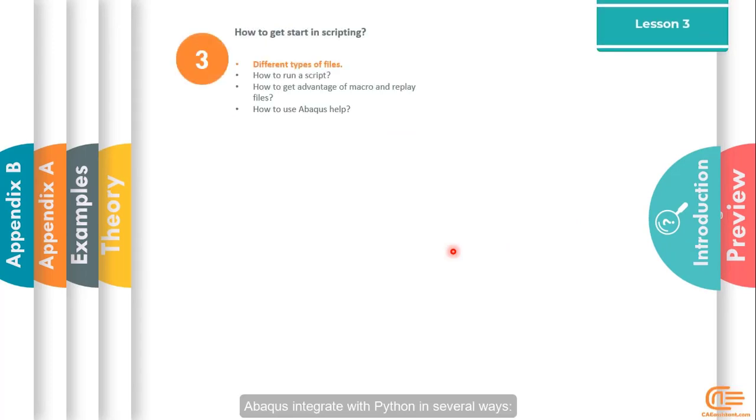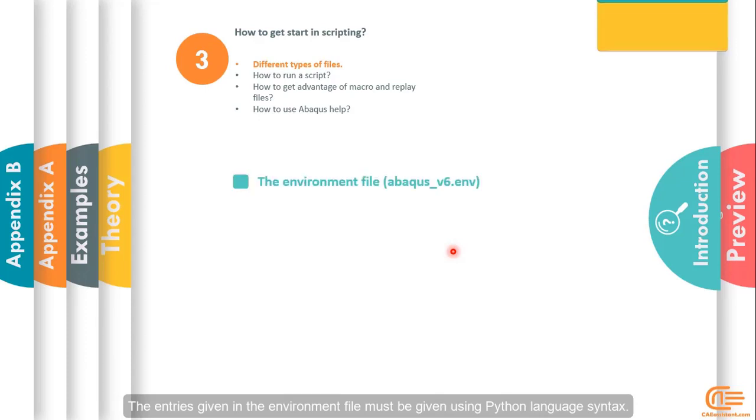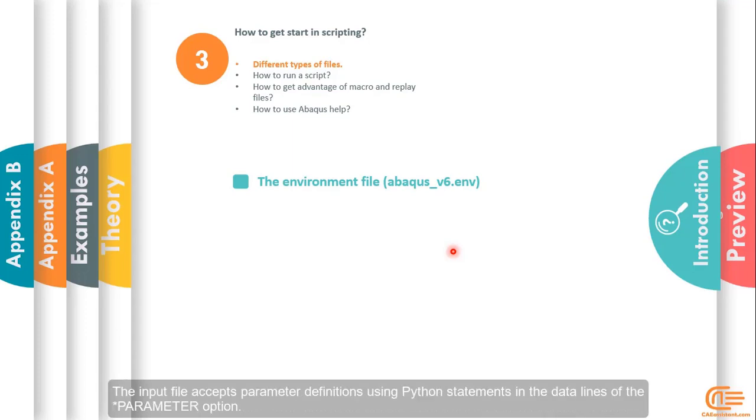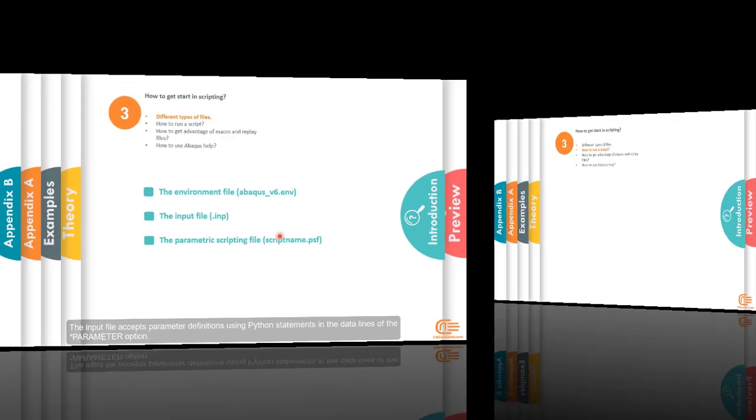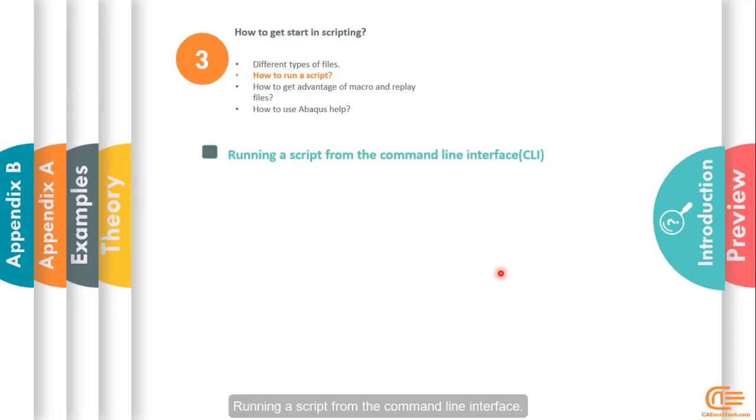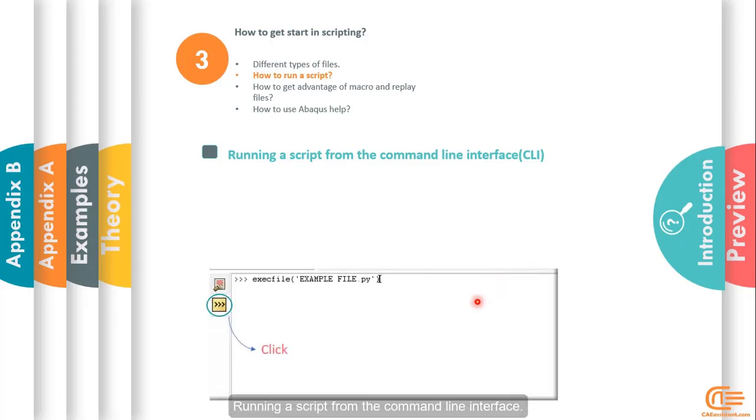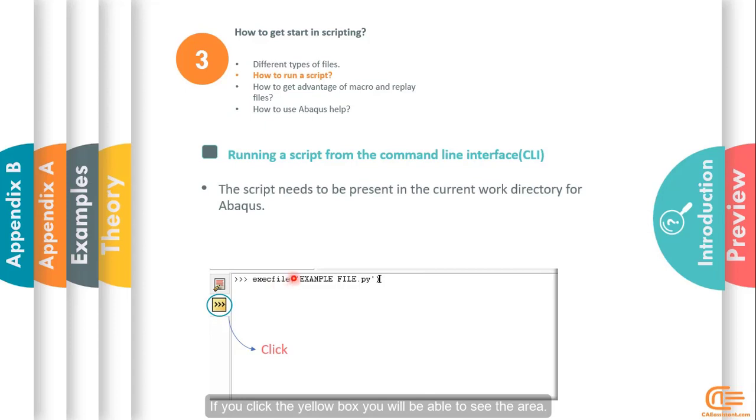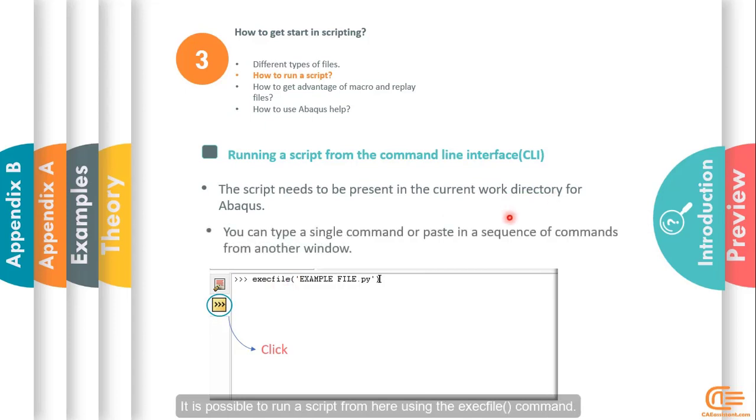Abaqus integrates with Python in several ways. The entries given in the environment file must be given using Python language syntax. The input file accepts parameter definitions using Python statements in the data lines of the star parameter option. Running a script from the command line interface. The command line interface is the area below the viewport in Abaqus CAE. If you click the yellow box, you will be able to see the area. It is possible to run a script from here using the exec file command. Note that the script file should be in your current work directory.